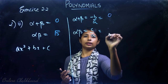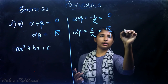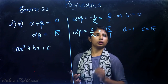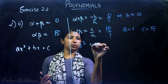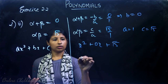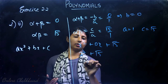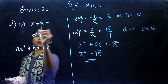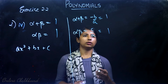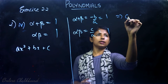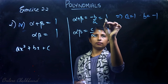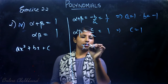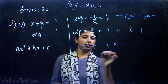Question 3: sum = 0 and product = √5. Comparing: a = 1, b = 0, and c = √5. The polynomial is x² + 0·x + √5, which simplifies to x² + √5. Question 4: sum = 1 and product = 1. Comparing: a = 1, b = -1, c = 1. The quadratic polynomial is x² - x + 1.